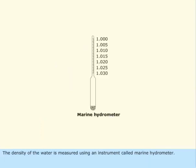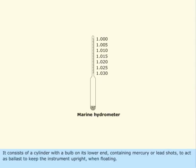The density of water is measured using an instrument called a marine hydrometer. It consists of a cylinder with a bulb on its lower end containing mercury or lead shots to act as ballast to keep the instrument upright when floating.